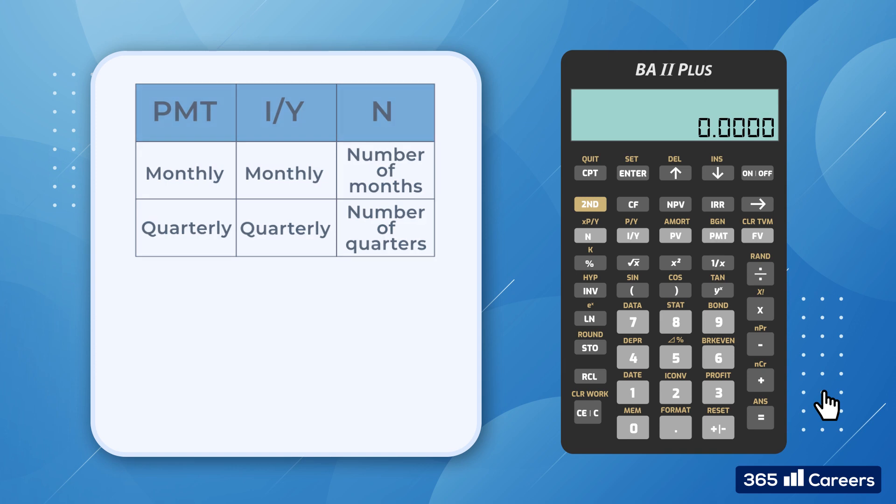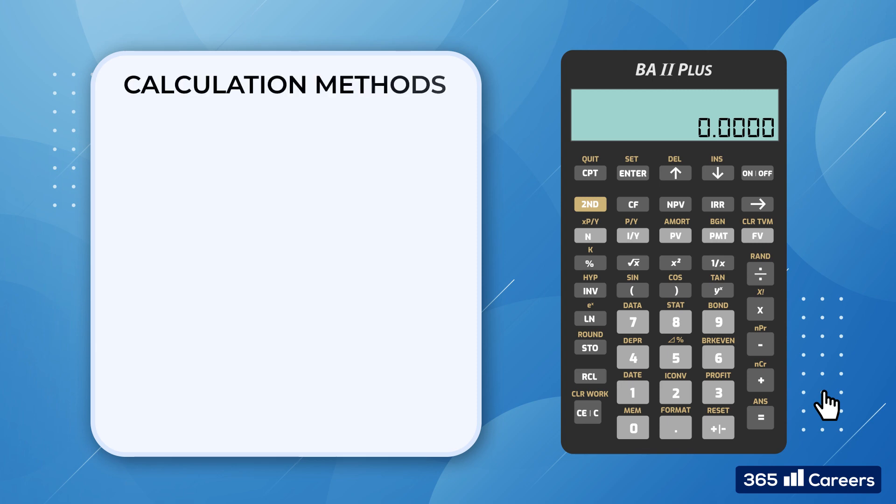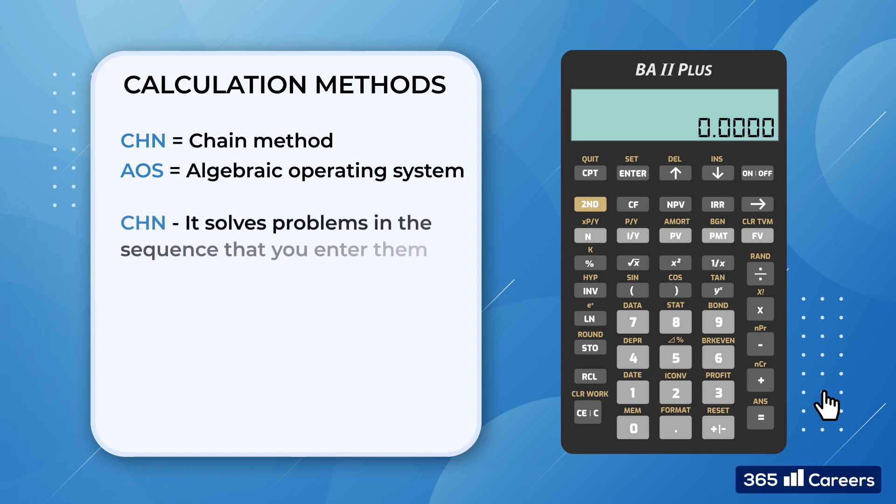Finally, let's choose which calculation method we will use. There are two of them. The first one is called CHN, which stands for Chain Method, while the second one is AOS, short for the Algebraic Operating System. So, let's do a demonstration for each of them so you can understand the difference. When the calculator is set to the chain calculation method, it solves problems in the sequence in which they have been inserted.